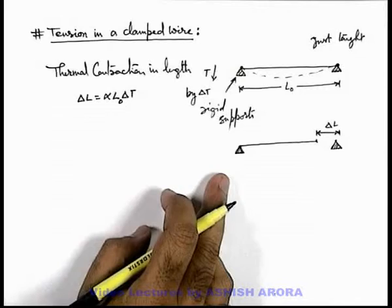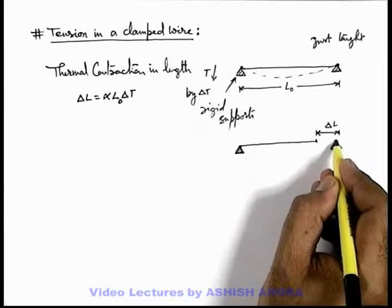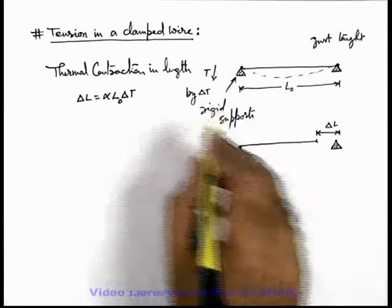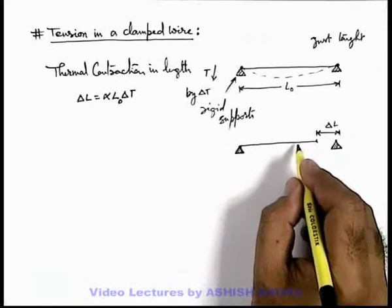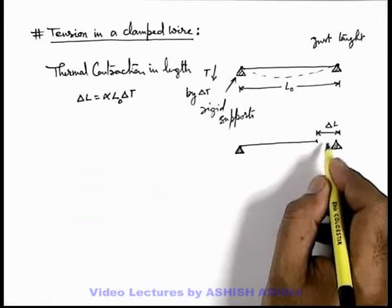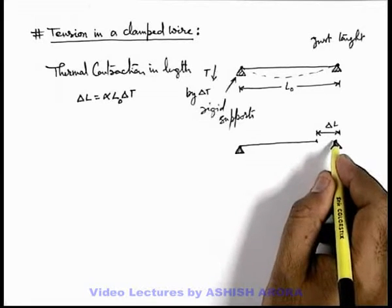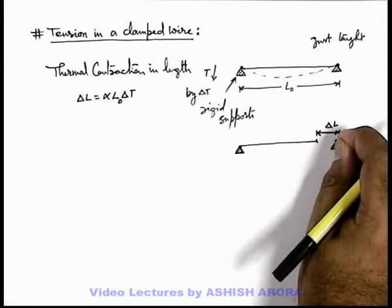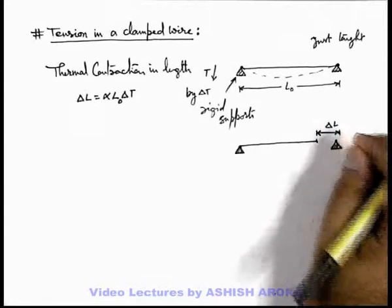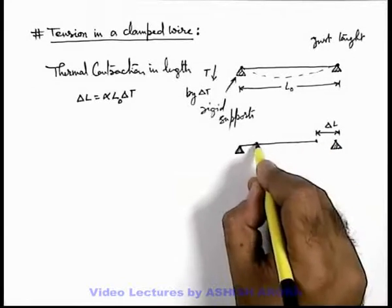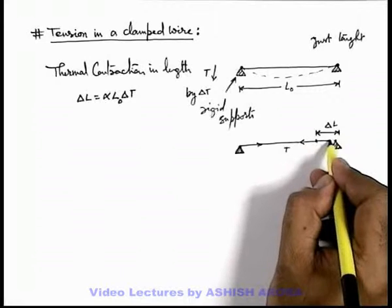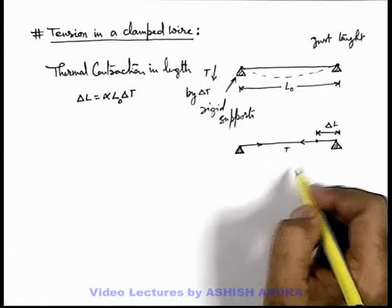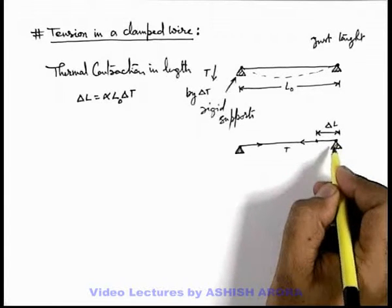In this situation, if it remains clamped at the rigid support, in that case whichever length is contracted due to thermal contraction will be compensated by elastic expansion. Or if you can assume, say it is contracted, and if I hold this end and pull it and tie it up again at the rigid support, we can say that a tension is developed in it. So the tension developed will be F, and the wire is elastically expanded and again it is clamped at the rigid support.